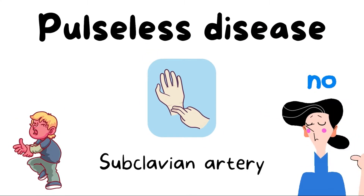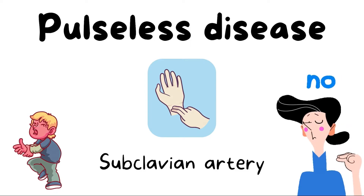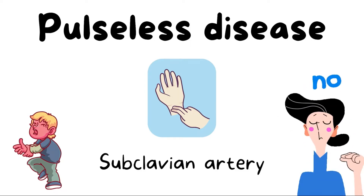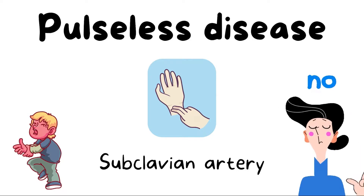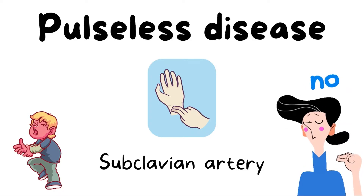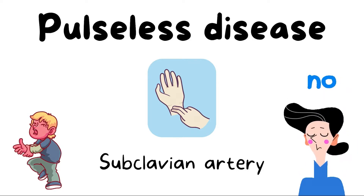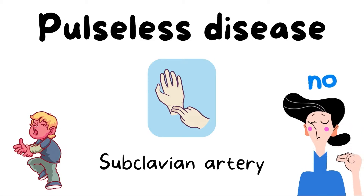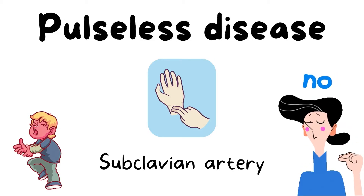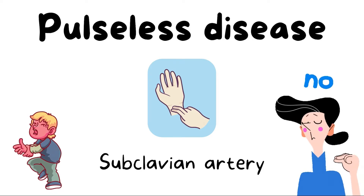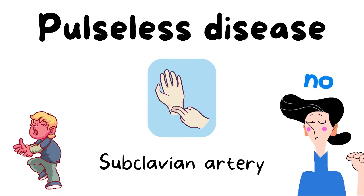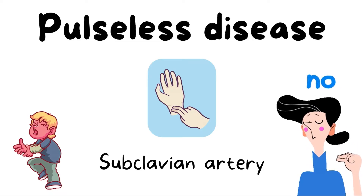It is called Pulseless Disease because it involves the subclavian artery, which forms the predominant source of blood supply for the upper limb. Since the subclavian artery gets affected, blood supply is compromised, so peripheral pulses like the radial artery pulse are not felt or are felt weakly in these patients. That is why it is called Pulseless Disease.